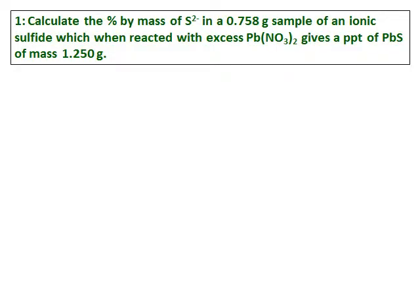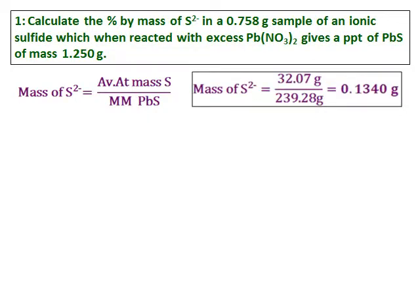Calculate the percent by mass of sulfide in a 0.758 gram sample of an ionic sulfide, which when reacted with excess lead nitrate gives the precipitate of PbS of mass 1.250 grams. To start the question, I need to find out how much of sulfide, the percent by mass, or how much of sulfide is there in PbS. So I will take the average atomic mass of sulfur and divide it by the molar mass of PbS. And I get the mass of sulfide in PbS.